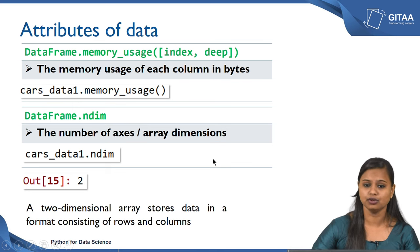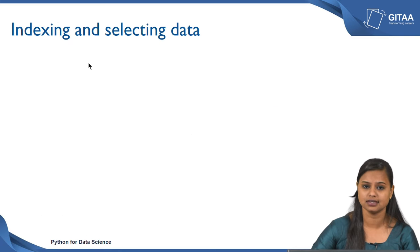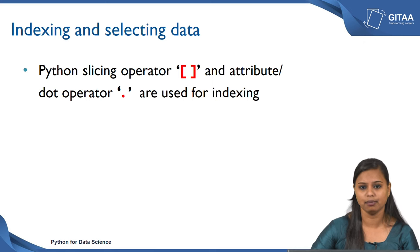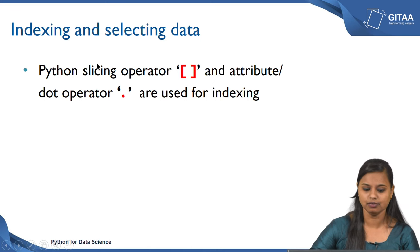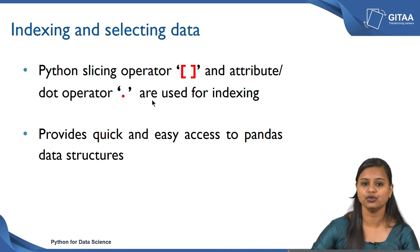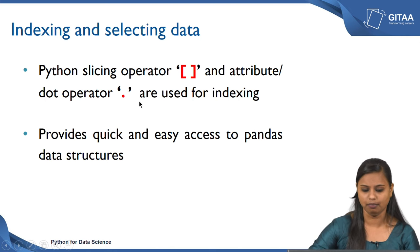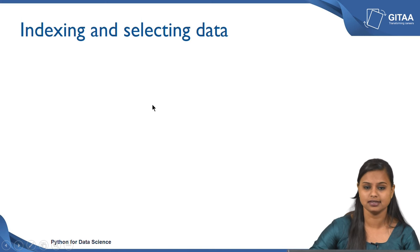A two-dimensional array stores data in a format consisting of rows and columns, which is why a DataFrame's dimension is 2. Next we will see how to do indexing and selecting data. The Python slicing operator — square brackets — and the attribute or dot operator are used for indexing. Indexing provides quick and easy access to pandas data structures whenever you want to select particular data from your DataFrame.